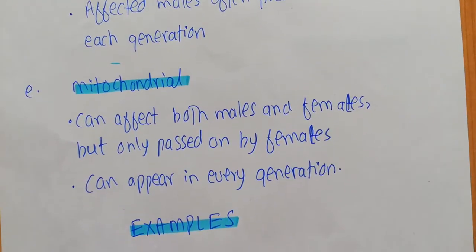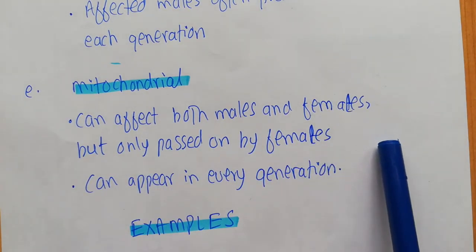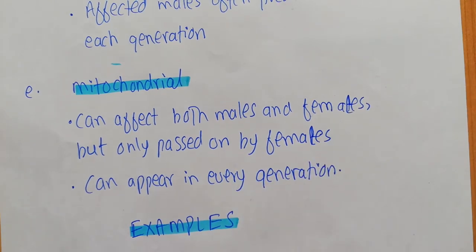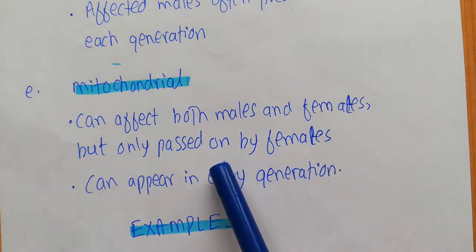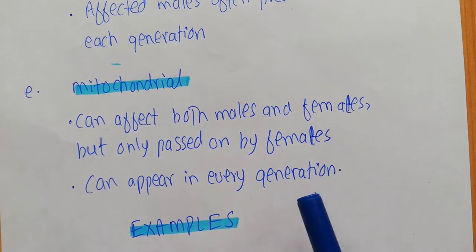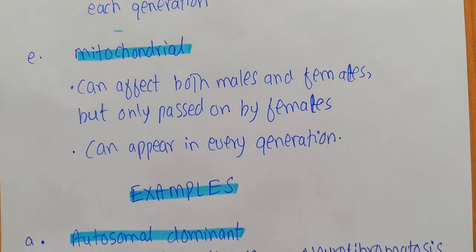For mitochondrial inheritance, the disease can affect both males and females, but it is only passed on by females. It is an established fact that mitochondria are only transferred to the next generation from the mother, not the father. Both males and females can be affected, but mitochondrial diseases are only passed on by females. These diseases can appear in every generation, and males and females have equal chances of inheriting and expressing a mitochondrial disease.